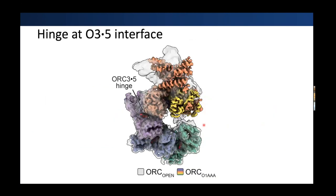In addition, we noticed a map of ORC in an open conformation. When you align this map with one of the previous maps, you can see that the ORC1, 4, and 5 subunits are very well aligned, while the ORC2 and 3 subunits are misaligned — definitely out of alignment. From this we felt there must be some kind of hinge at the ORC3-5 interface that is allowing these separate bodies of the complex to move independently of each other.